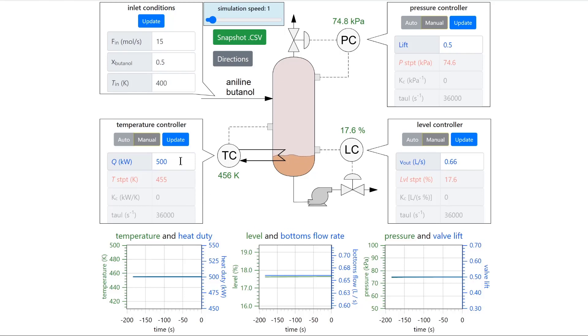Next enter a new value for one of the manipulated variables. Here we will do a 10% increase to the heat duty bringing it up to 550 kilowatts. Then press update or press the enter key on your keyboard.